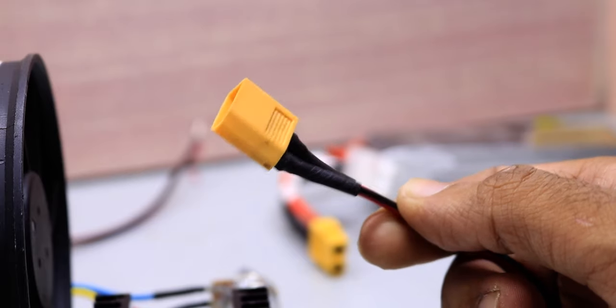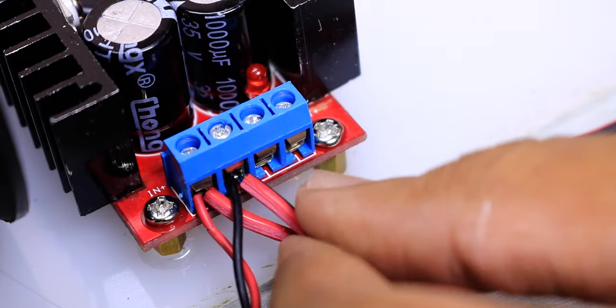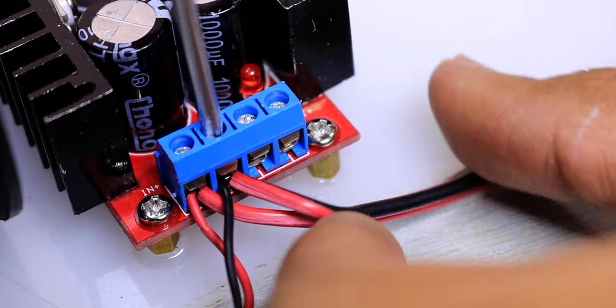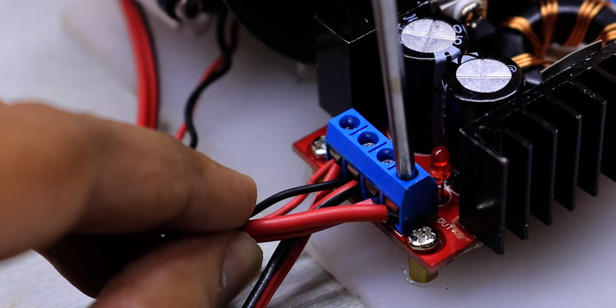Now for the input I used this XT60 connector and connected it along with the fan cable at the input side of the board. So fan and the circuit receive 12V power from the battery.